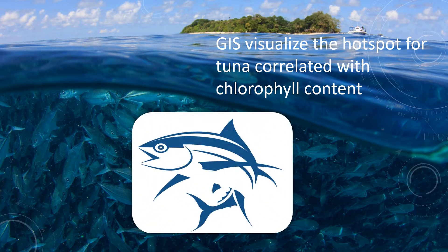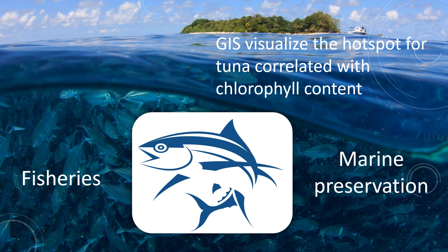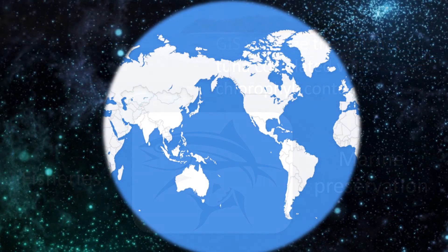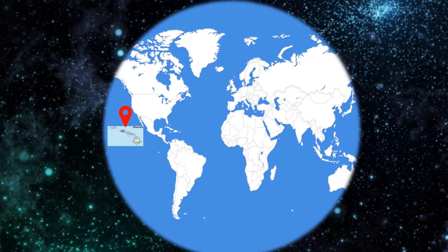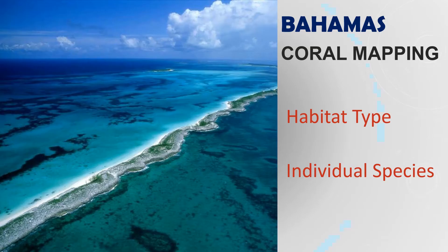The use of GIS enables us to visualize the hotspot for tuna correlated with chlorophyll content and other variables. Knowing the habitat of the tuna is important for the fisheries industry and marine preservation. Next, let's look at Hawaii, which is made up of a chain of volcanic islands. The first full-fledged coral mapping was carried out in the Bahamas, resulting in a precise map of the marine area that identifies different habitat types and locates individual coral species — and the same can be done in Hawaii.